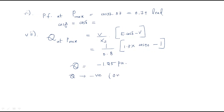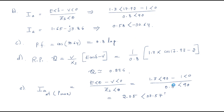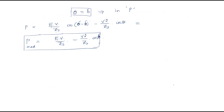Since the reactive power value is negative, it is delivered — the machine is over-excited. If the reactive power is positive, the machine is absorbing reactive power and is under-excited. This completes the problem on the condition for maximum output power. I hope all of you understand the session, thank you.